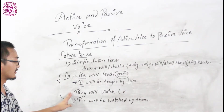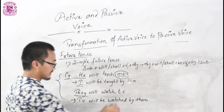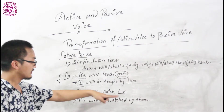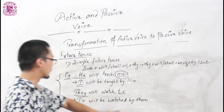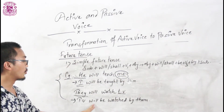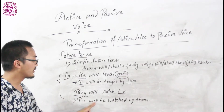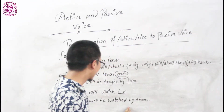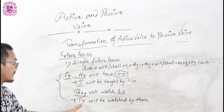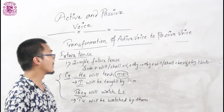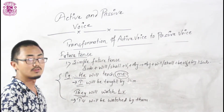Similarly, in the next example: 'They will watch TV.' Here 'they' is used as subject and 'TV' is used as object. While using 'TV' as subject, we write it the same. Then 'will or shall' — I prefer 'will'. So: 'TV will be' — the V3 of 'watch' is 'watched'. So: 'TV will be watched by' — and 'they' will be changed into 'them' while using as object. So your final answer will be: 'TV will be watched by them.' In this way you can solve questions related to simple future tense while changing from active voice to passive voice.